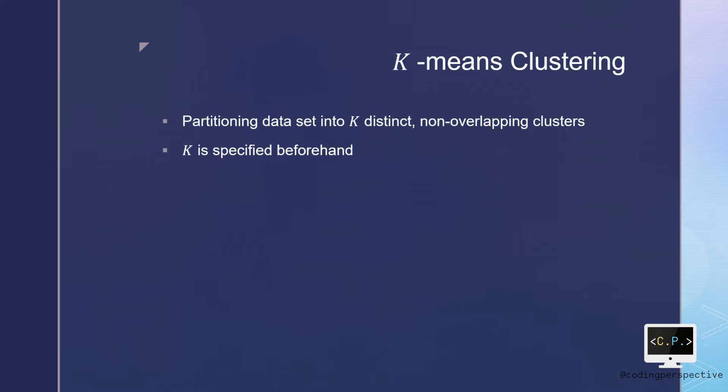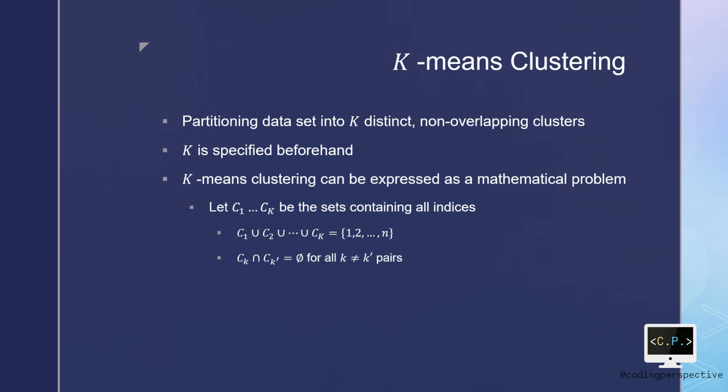The k-means clustering procedure results from a simple and intuitive mathematical problem. We begin with some notation. Let C1 till CK be sets containing all indices. These sets satisfy two properties.